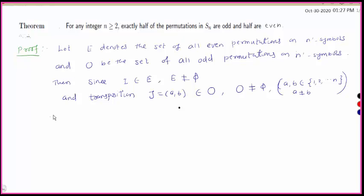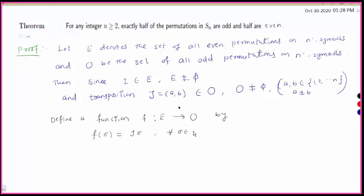Now we define a function f from E to O by f(σ) = τσ for all σ belonging to E. That is, for any even permutation σ, we map it to τσ, where τ is our fixed transposition.